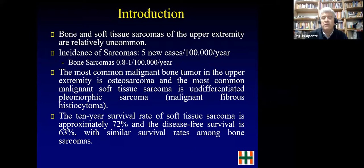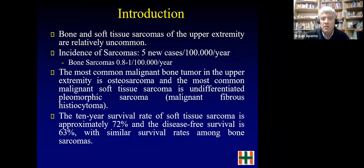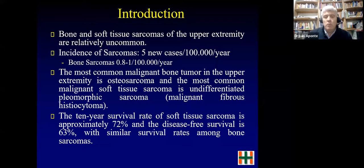Soft tissue sarcomas are more common than bone sarcomas; bone sarcomas occur at almost one per 100,000 per year. Focusing on the upper extremity, the most common malignant bone tumor is osteosarcoma, and the most common malignant soft tissue tumor is undifferentiated pleomorphic sarcoma, which we used to call malignant fibrous histiocytoma but is now called UPS. The survival rate for soft tissue sarcomas is 72% and the disease-free survival is 63%, similar to bone sarcomas.